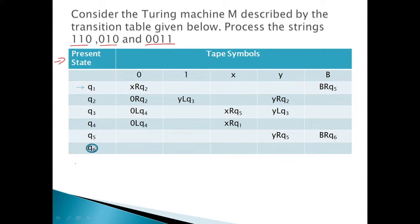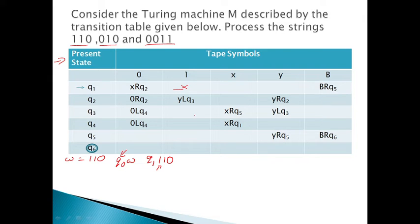Let us start with the first string, that is 110. The initial configuration is Q-naught W, meaning the initial state followed by the string. Here Q1 is the initial state and the string is 110, so you are currently reading 1. If we see the table closely, for 1 the move is not defined, so the machine is not going to accept because M does not go further — it halts with the move undefined.